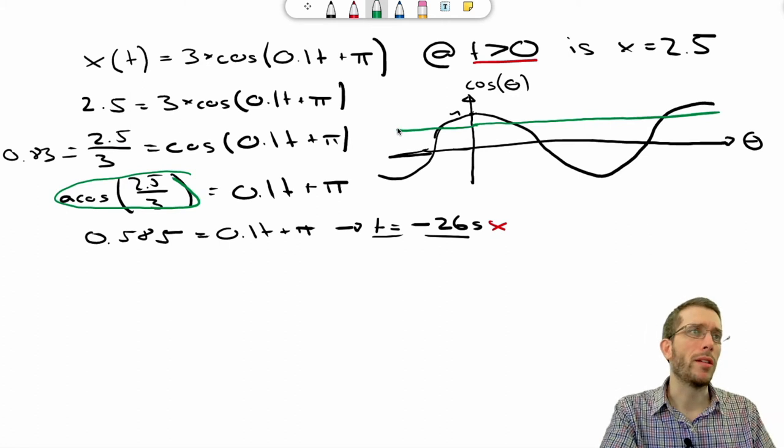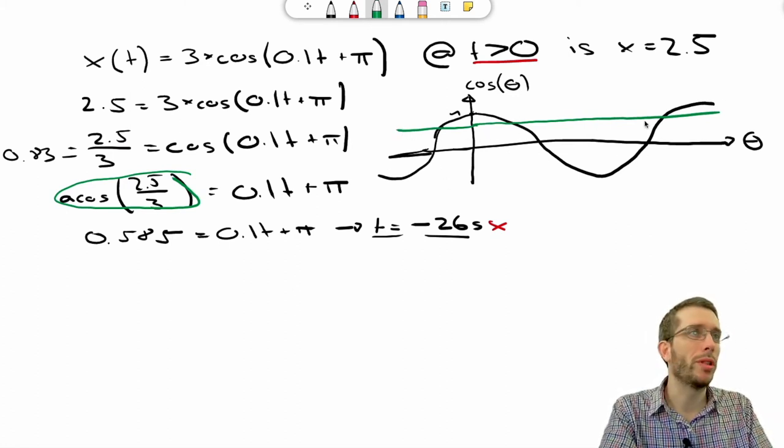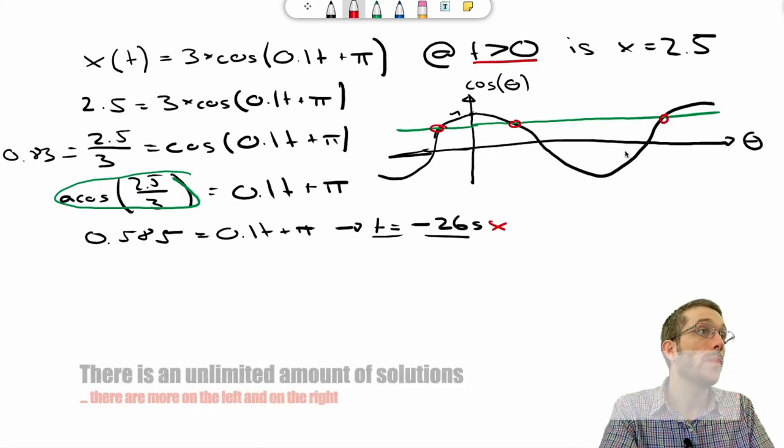Now before we had calculators, what people had, they actually had printouts of the cosine function. They would put the ruler down here and then they would immediately see, oh look, I have multiple solutions. I have one here, I have one here, I have one here.